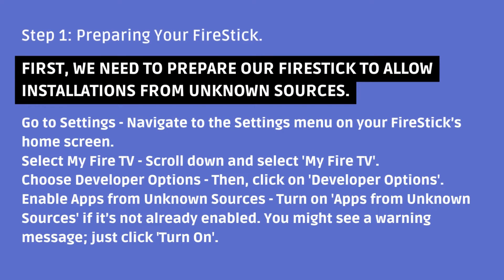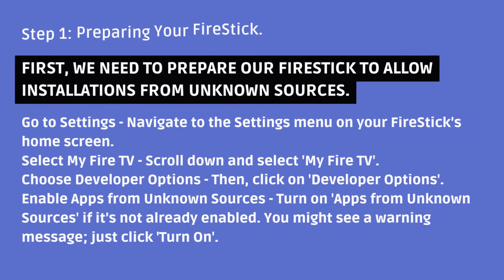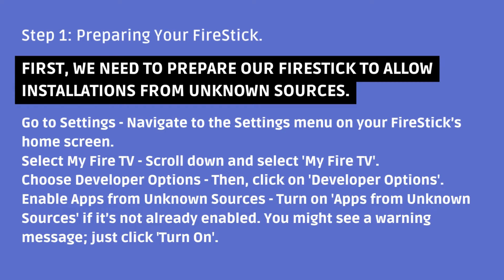Step 1: Preparing your Fire Stick. First, we need to prepare our Fire Stick to allow installations from unknown sources. Go to Settings — navigate to the Settings menu on your Fire Stick's home screen. Select My Fire TV, then scroll down and choose Developer Options. Enable Apps from Unknown Sources — turn it on if it's not already enabled. You might see a warning message; just click Turn On.